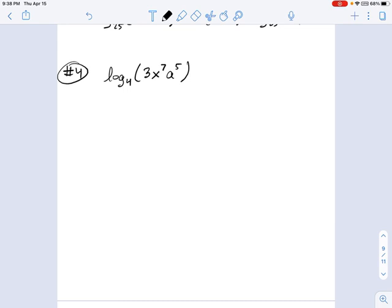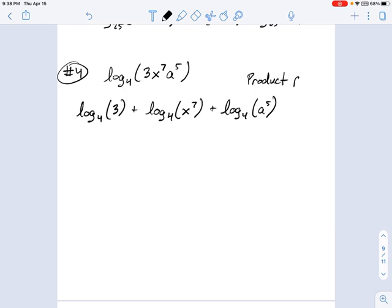And let's just start this off using the product rule. I'm going to say the logarithm base 4 of 3, that's the first one, plus the logarithm base 4 of x to the 7th, that's the second one, and the logarithm base 4 of a to the 5th, that's the third one. And this was all accomplished using the product rule that we were talking about earlier.